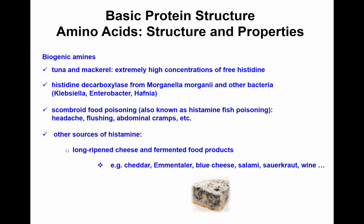Histamine poisoning is called scombroid, also known as histamine fish poisoning, causing headaches, flushing, and abdominal cramps — sometimes resembling an allergic reaction. Another source of histamine is blue cheese, so you can have both tyramine and histamine in blue cheese.